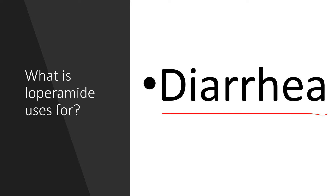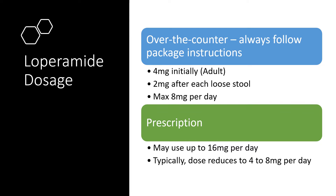What is it used for? Diarrhea is the primary use for loperamide. The usual over-the-counter dosage — you'll want to look at the package and follow the instructions — but typically it's four milligrams, or two tablets, initially, and then one tablet after each loose stool, not to exceed eight milligrams per day.